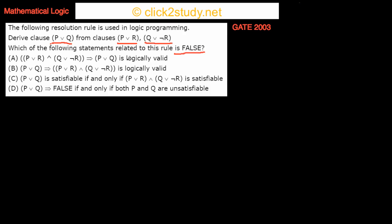Option A states that (P or R) and (Q or not R) implies (P or Q) is logically valid. We need to check whether this implication is true or not. This is essentially the resolution principle itself, so it should be true, but we can quickly verify the validity.